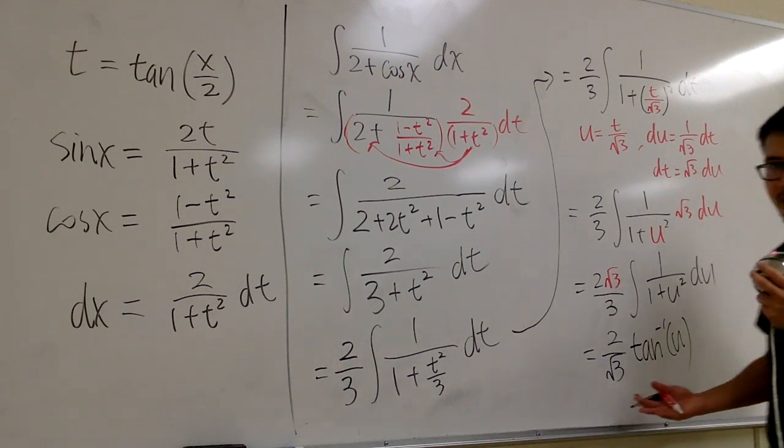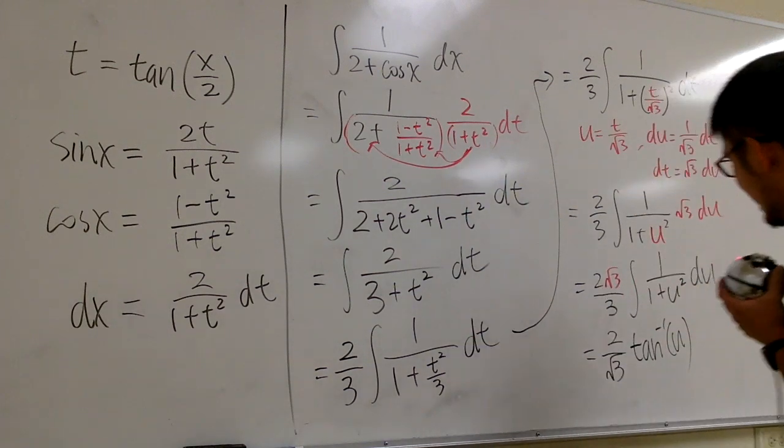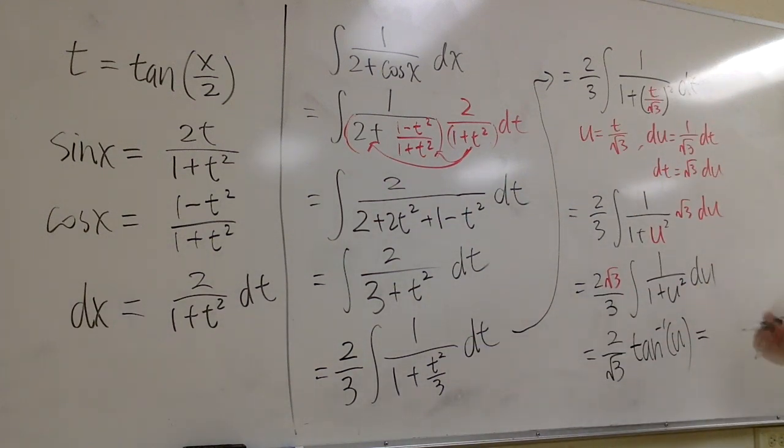Why? Because this is 3 to the 1 half power, this is 3 to the 1 power in the bottom. 1 half power minus 1, you get negative 1 half, which is the same as square root in the denominator. Anyways, you can just do that. But then the integral of this is just the inverse tangent of u. We're done with the integration, and now we have to go back, and then we have to go back. So,